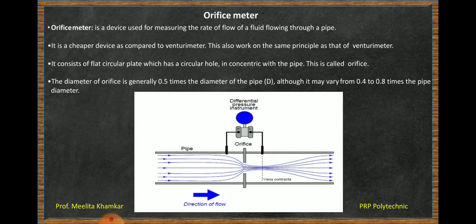Next is orifice meter. The orifice meter is a device which is used for flow measurement. It works on the same principle as the venturimeter, but the cost compared to the venturimeter is less. The orifice meter has an orifice plate. There is a plate which is fitted into the pipe and it consists of a circular hole which is concentric to the pipe. This hole is called an orifice. This orifice diameter is generally 0.5 times the diameter of the main pipe, although it may vary from 0.4 to 0.8 times the diameter of the pipe.